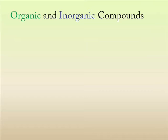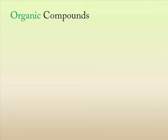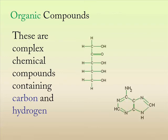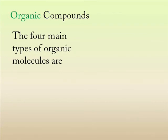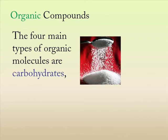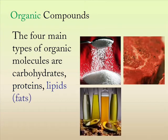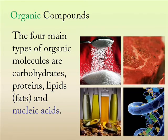We're going to start having a look at a few organic compounds. Now, organic compounds, as you probably remember, are complex chemical compounds that contain carbon and hydrogen. The four main types of organic molecules we're going to be looking at are carbohydrates, proteins, lipids, as well as nucleic acids.